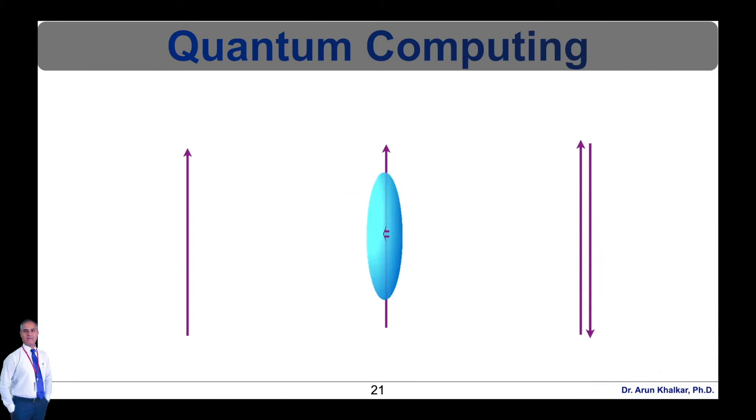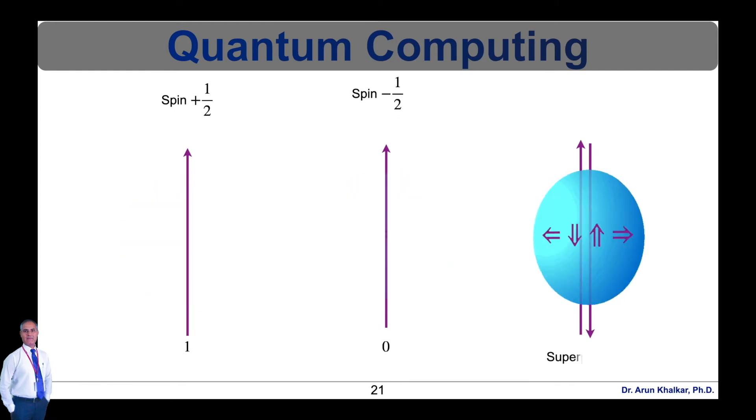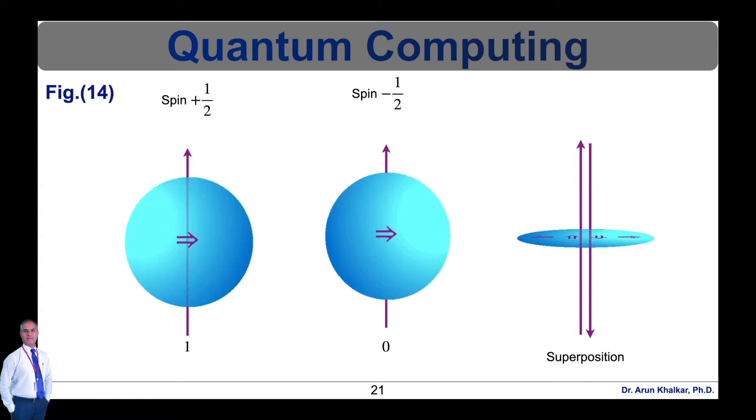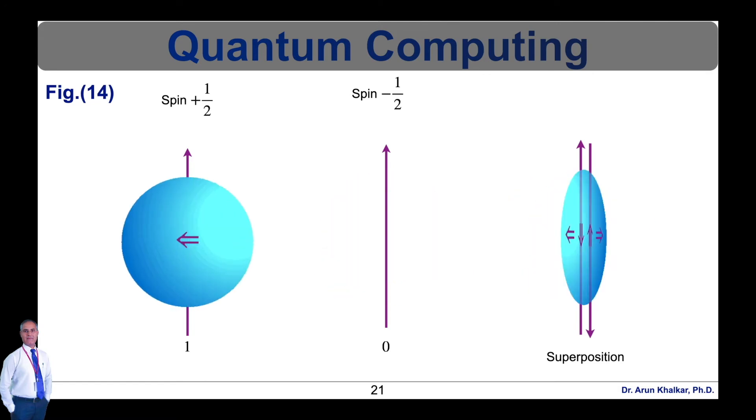Now let's see what is superposition. The qubit can hold both values, zeros and ones, at the same time, which is known as a superposition state. Thus, at one time, the number of computations possible in a quantum computer is 2 raised to n, where n is the number of qubits used. For example, a quantum computer consisting of 500 qubits has a potential to perform 2 raised to 500 calculations in a single state. That's why the speed of quantum computing is very, very high.